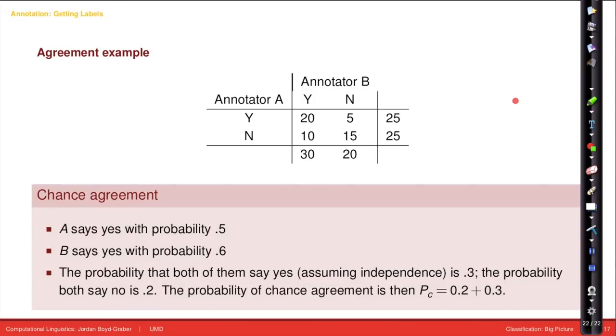But by chance, the probability that both of them say yes, assuming independence is 0.3. The probability that both say no is 0.2. This comes from multiplying their marginal probabilities. The marginal probability for A saying yes is 0.5. The marginal probability for B saying yes is 0.6. You multiply them together, you get 0.3. You take the complement to get the probability of saying no, 0.5 times 0.4, that's 0.2.